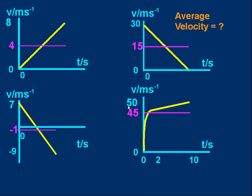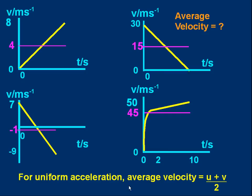So providing the velocity changes uniformly, that means uniform acceleration or constant acceleration, a straight line for our velocity-time graph, we can say that for uniform acceleration, the average velocity is u plus v over two. But that only works if you've got uniform acceleration, constant acceleration.